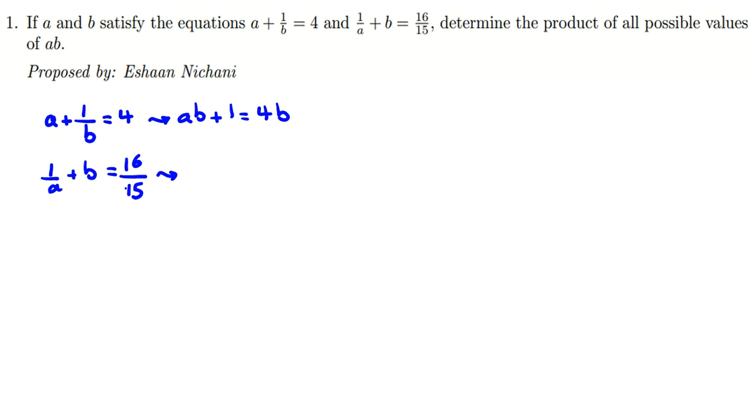And if we multiply both sides here by a, it will be 1 plus ab equals 16 over 15 a. Now if we consider these two equations, the left side of them are equal, so the right side also will be equal.